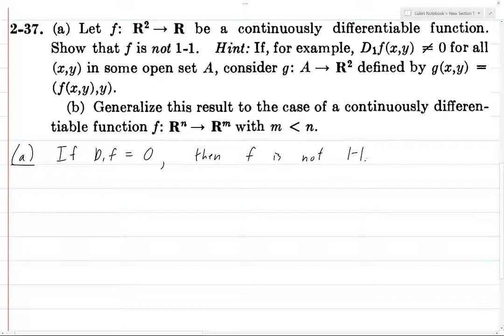And why is that? Well, if you choose any x₁ not equal to x₂ and you look at f(x₁,y) and compare it to f(x₂,y), if d₁f is 0 everywhere, then f has to be constant with respect to the first variable, i.e. it's independent of the first variable. And so then f(x₁,y) will be equal to f(x₂,y) for all x₁ and x₂ in R, and so it's not one-to-one.